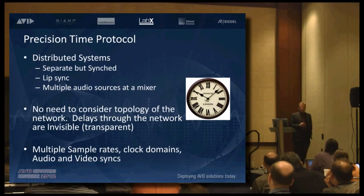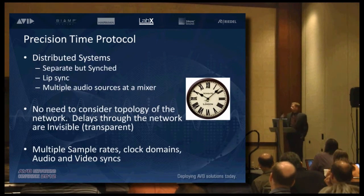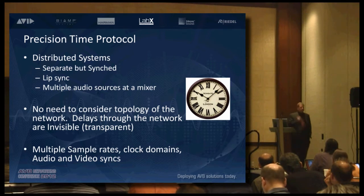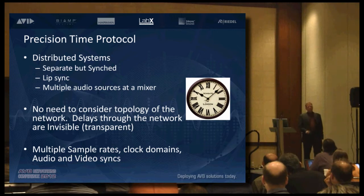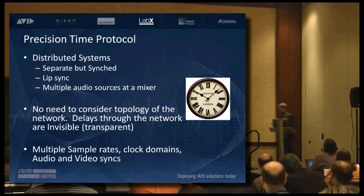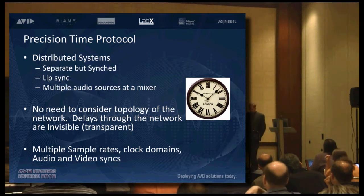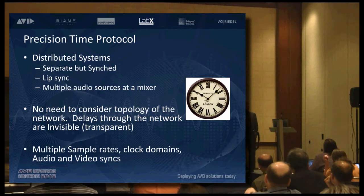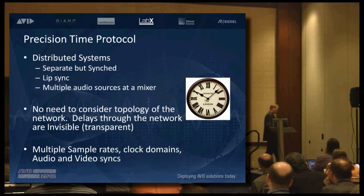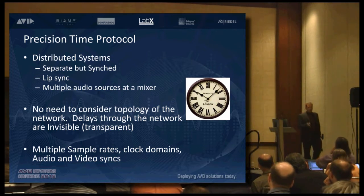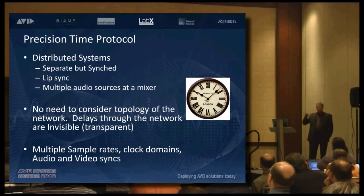Precision time protocol allows us to achieve never-before-achievable accuracy of timing. Before AVB, without AVB bridges or endpoints, you cannot get this level of accuracy. And once you've got that level of accuracy with all of your devices on the network synchronized, you can do distributed systems. With this level of accuracy, it's really straightforward and it opens up a lot of doors.